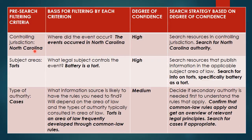The controlling jurisdiction based on the case scenario is North Carolina. The events occurred in North Carolina, so the answer to the question 'where did the event occur' is North Carolina. The degree of confidence that the researcher has in determining this is high, and the search strategy is to search for North Carolina authority, specifically looking for resources with North Carolina authority.